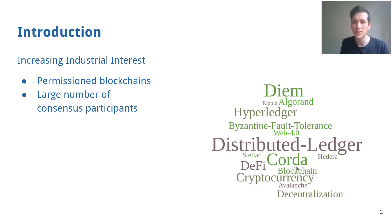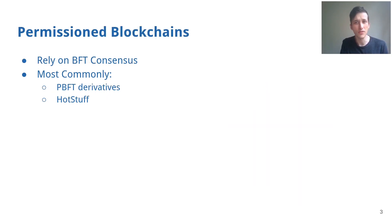In the past few years there has been an ever-increasing industrial interest concerning permissioned blockchains that support large numbers of consensus participants like Facebook's Diem or Corda. Most of these solutions rely on BFT consensus, which most commonly are either pBFT derivatives or HotStuff.